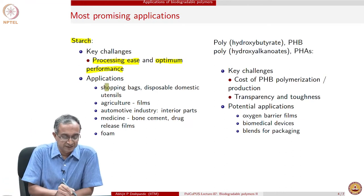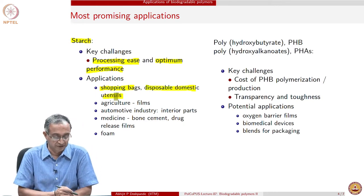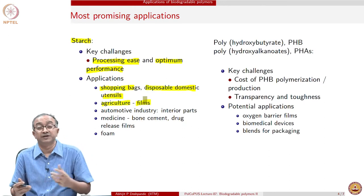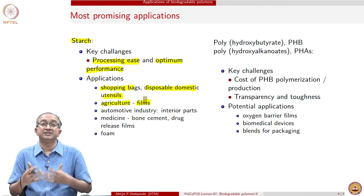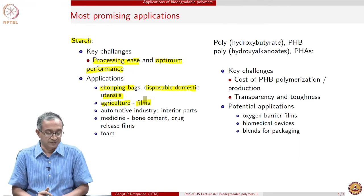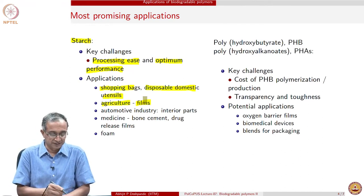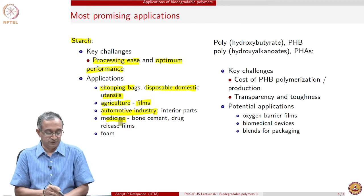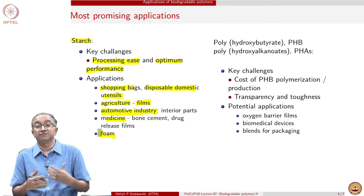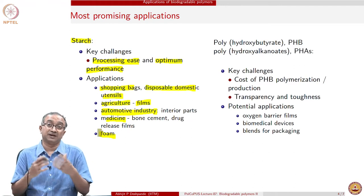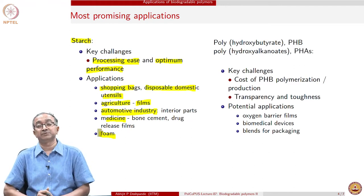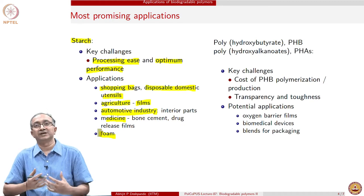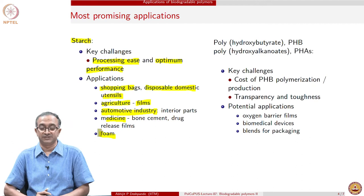Therefore, we have seen that starch-based shopping bags are available. There are a lot of domestic utensils available in the market. In agriculture, mulch films are used to manage the environment under which plant growth happens, and starch-based materials are used there too. Even interior parts in the automotive sector, medicine use, and also foam — instead of styrofoam, can we use starch-based foam? Because styrofoam is a large component of plastic waste management issues. Foam made out of starch is a promising application, which already is being done to a limited extent.